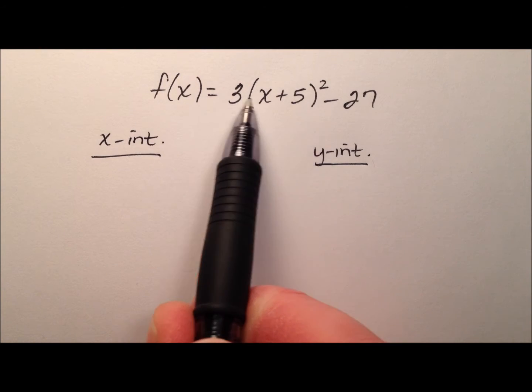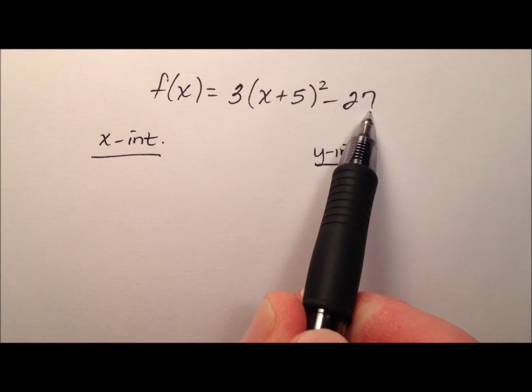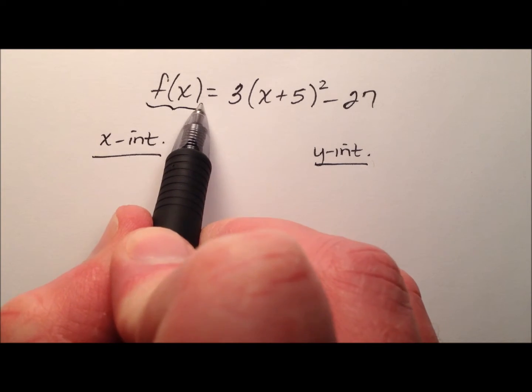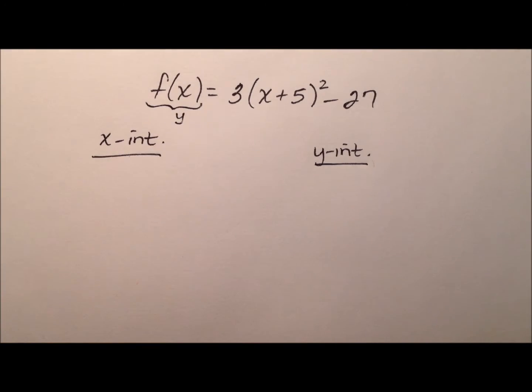Alright, so it looks like this quadratic function is written in vertex form, and remember we can always exchange this f(x) with a y, and so let's go ahead and do the x-intercepts first.